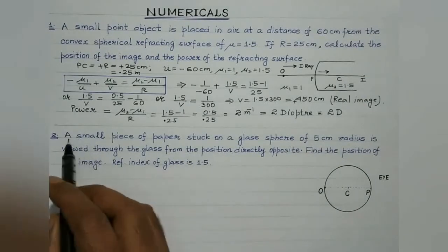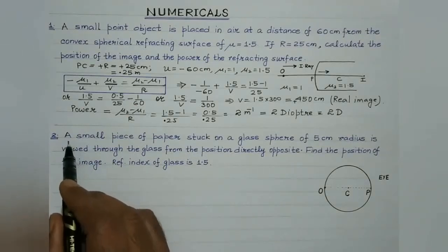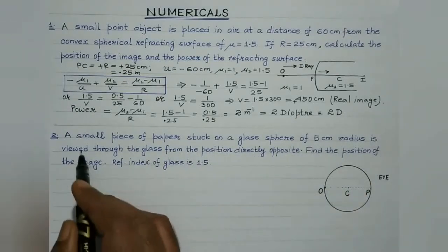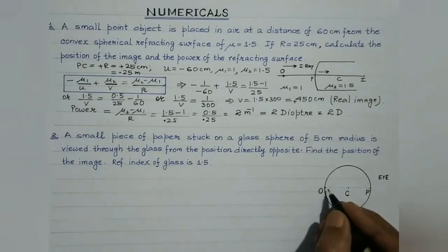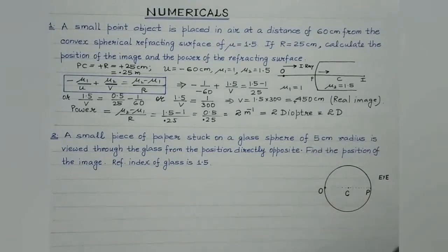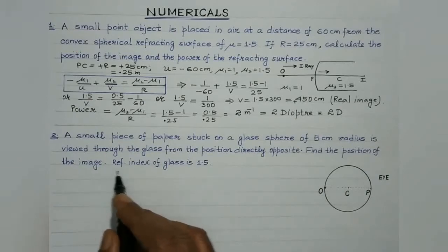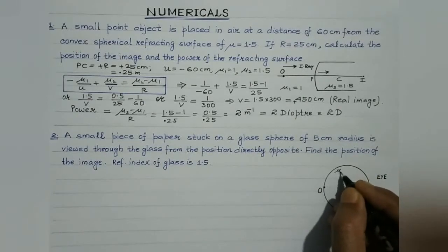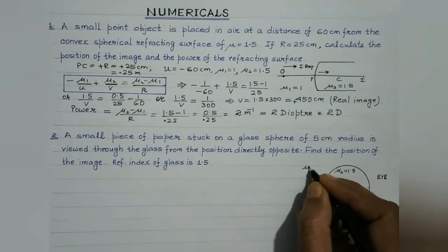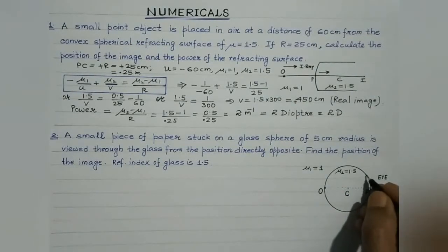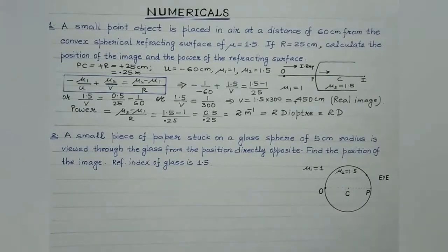We have calculated both the position of the image as well as the power of the refracting surface. The next question is a very interesting one. A small piece of paper stuck on a glass sphere of 5 cm radius is viewed through the glass from the position directly opposite. Suppose this is the piece of paper stuck on a glass surface of radius 5 cm, and it is viewed from a position directly opposite — this is the position of the eye of the observer. We are supposed to find out the position of the image. The refractive index of the glass is 1.5, placed in air whose refractive index is 1.